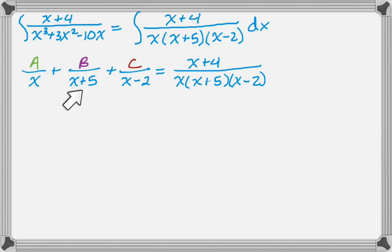What's underneath B is x plus 5. So go here, cover it up, and substitute in negative 5. That's negative 1 in the numerator, and then I have 35 in the denominator, so B is going to be negative 1 over 35.